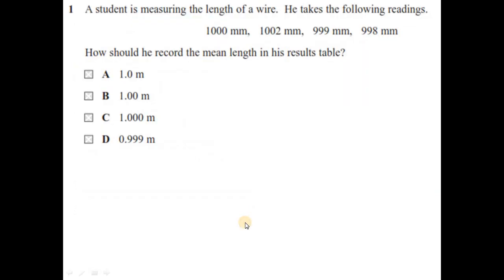Question number 1. A student is measuring the length of a wire. He takes the following readings: 1000mm, 1002, 999mm, 998mm. How should he record the mean length in his result table? If you see, all options are given in meters, but the data is in millimeters.